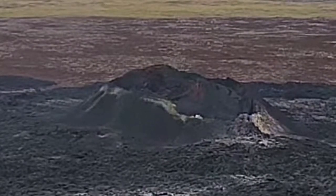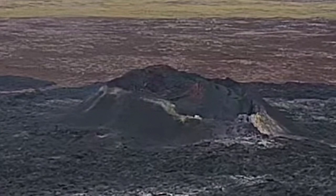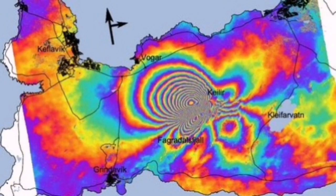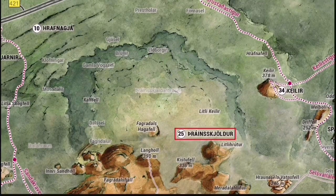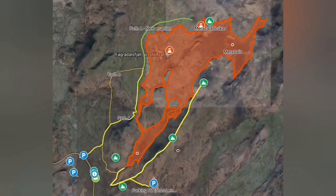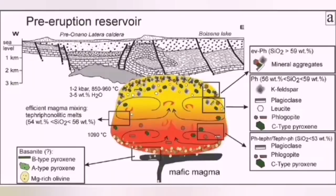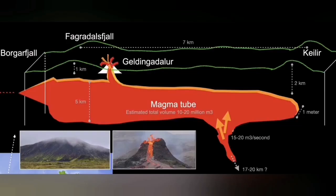The crust of the earth there is just five kilometers, so practically anything within the five-kilometer depth is happening. We see through the interferometry the tension and the rising of the ground in that area.